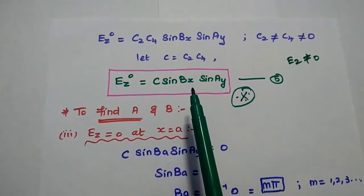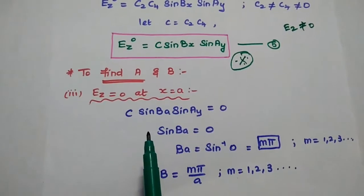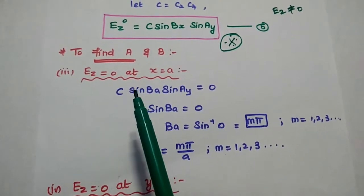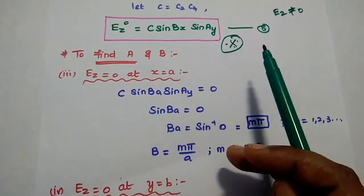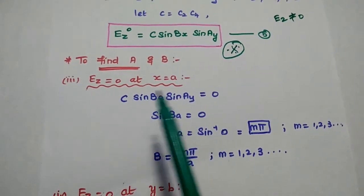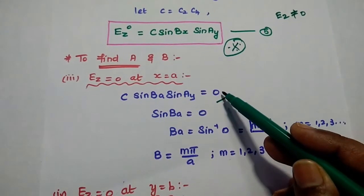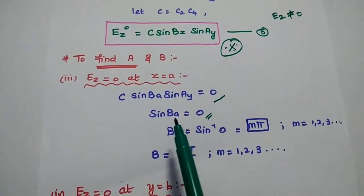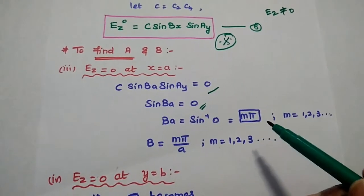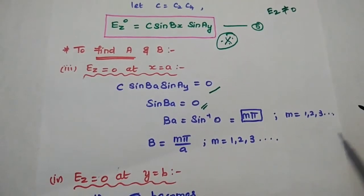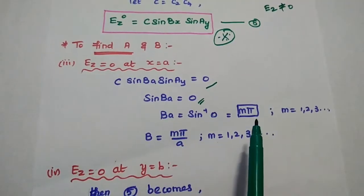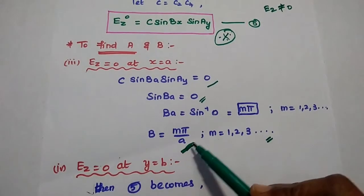To find the values of a and b, we use the third and fourth boundary conditions. The third condition: EZ = 0 at x = a gives C sin ba sin ay = 0, so sin ba = 0, meaning ba = m pi, and therefore b = m pi over a, where m is an integer (1, 2, 3, ...). The fourth boundary condition: EZ = 0 at y = b gives C sin bx sin ab = 0, so sin ab = 0, meaning ab = n pi.